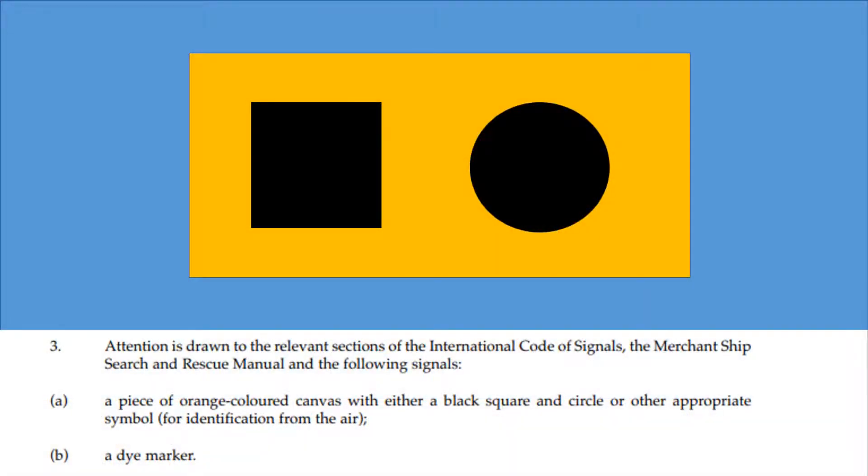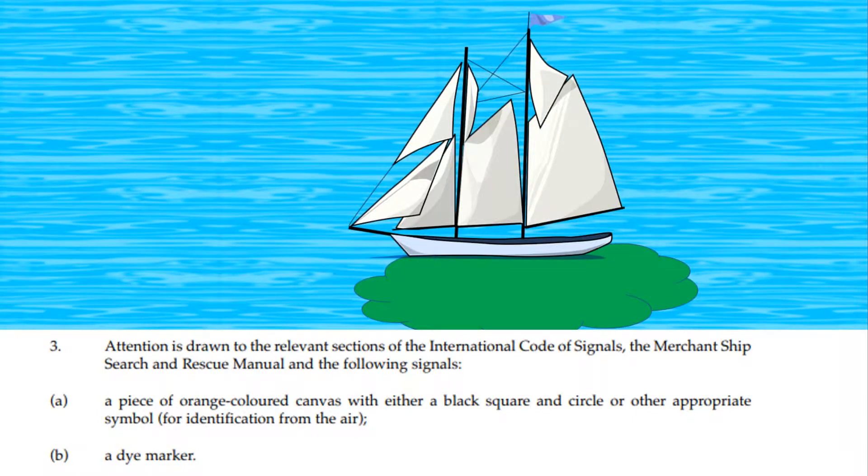Attention is drawn to the relevant sections of the International Code of Signals, the Merchant Ship Search and Rescue Manual, and the following signals: a piece of orange-colored canvas with either a black square and circle or other appropriate symbol for identification from the air, and a dye marker.